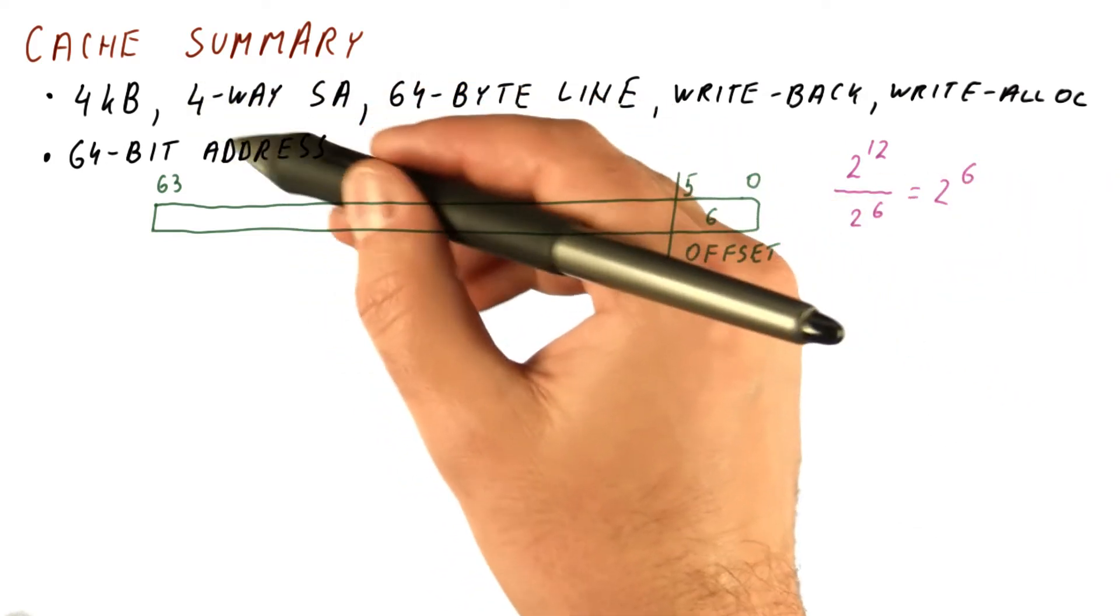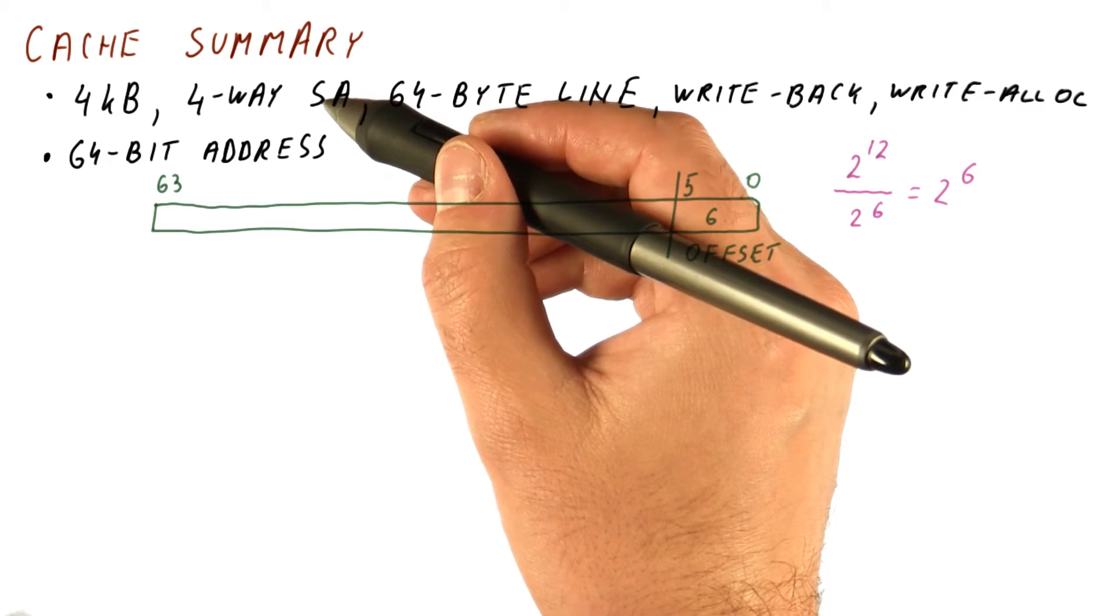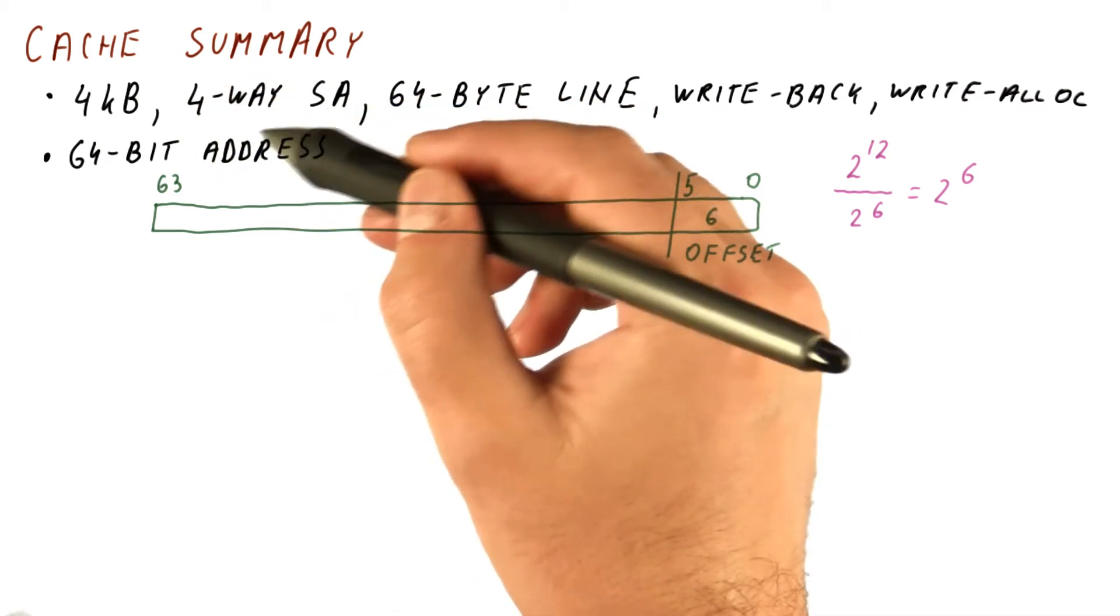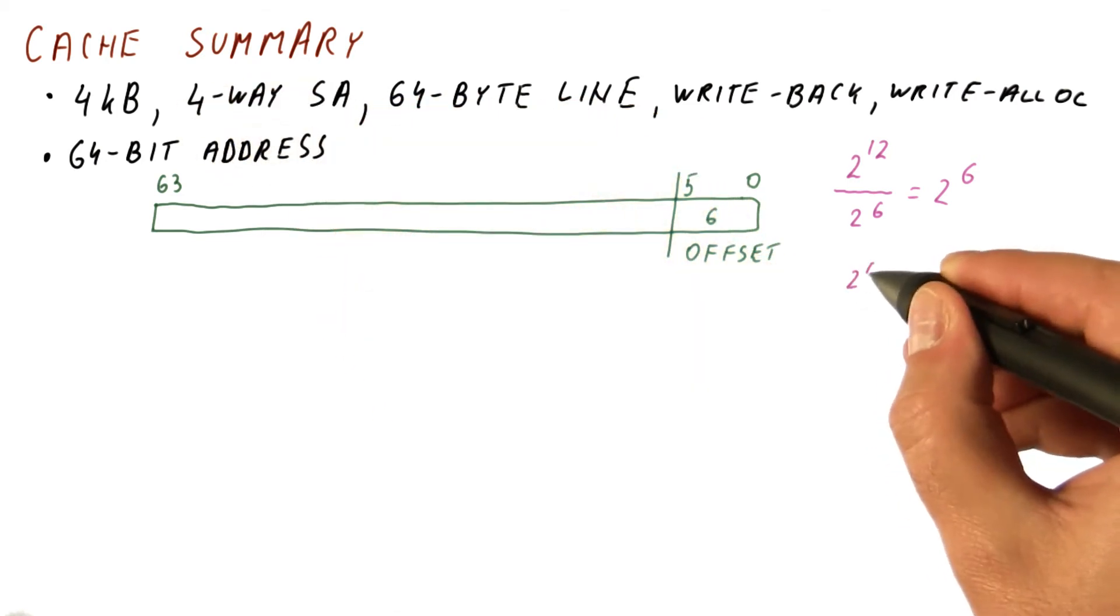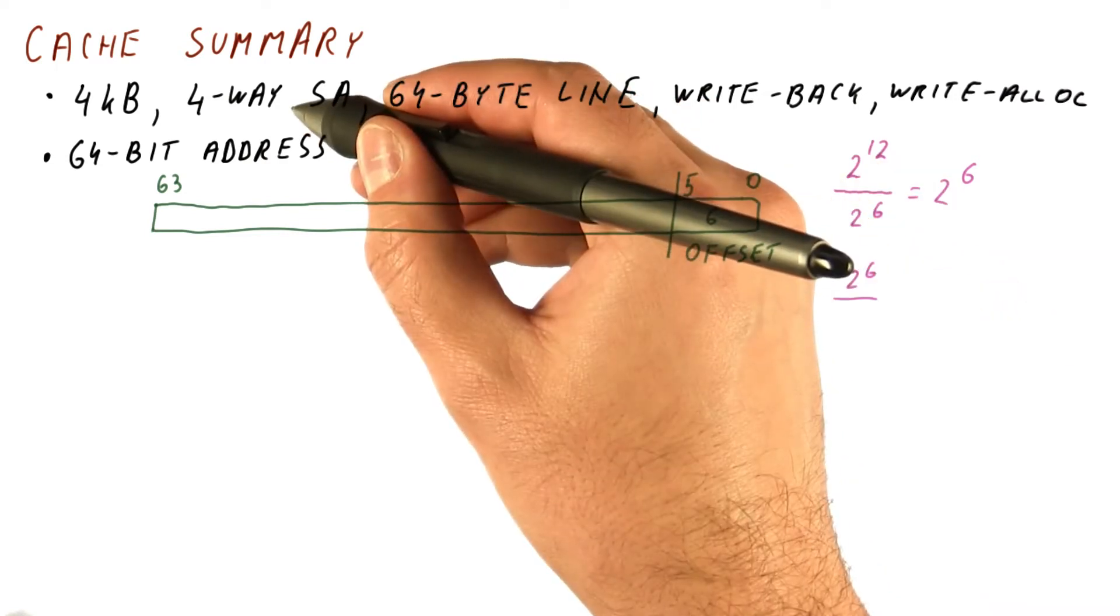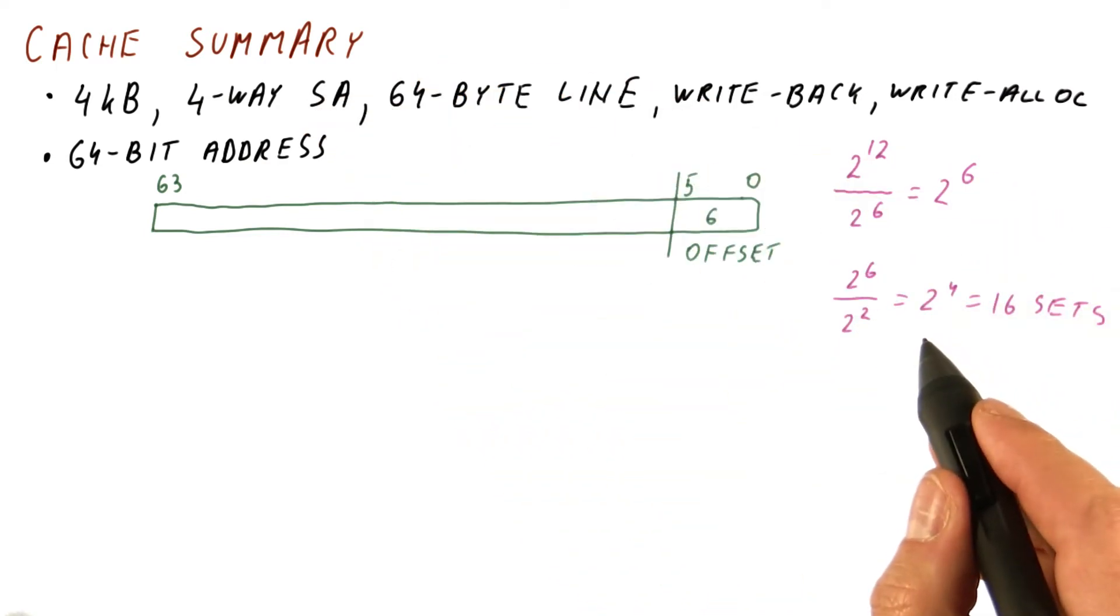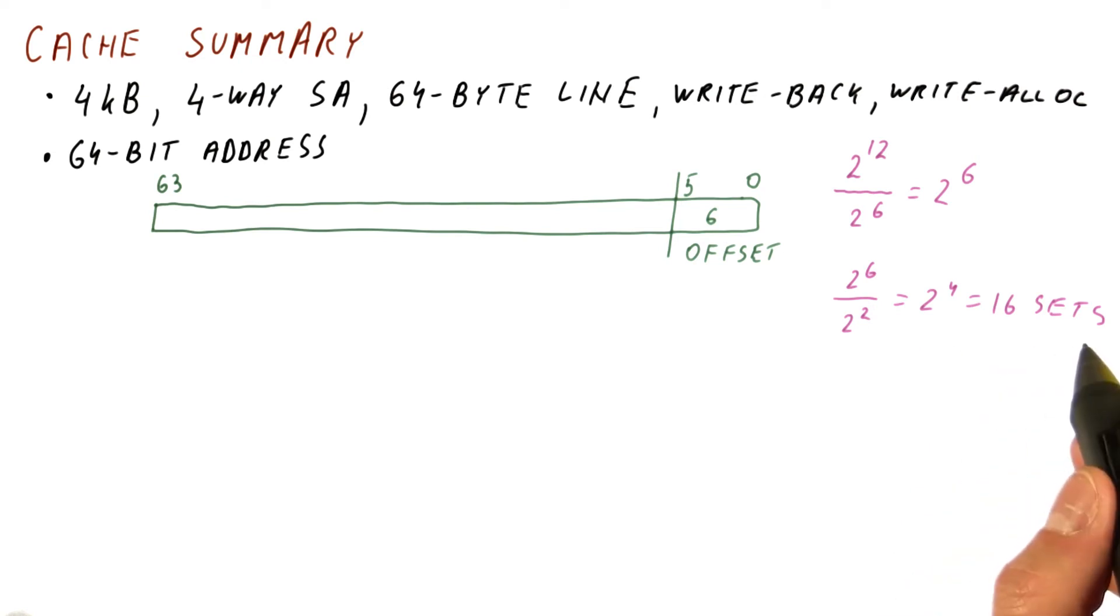It's a four-way set associative cache, which means that every set has four blocks in it. So we divide the number of blocks with the number of blocks in a set, and we get 2 to the 4th, or 16 sets.